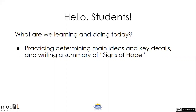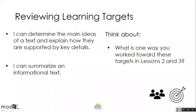We're going to repeat the same process that we did this week with a new section of the book. Learning targets for today: I can determine the main ideas of a text and explain how they are supported by key details, and I can summarize an informational text. Think about one way you worked toward these targets in Lessons Two and Three. Think about it in your head for 30 seconds, or turn and talk to somebody at home.